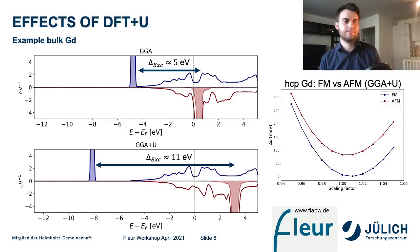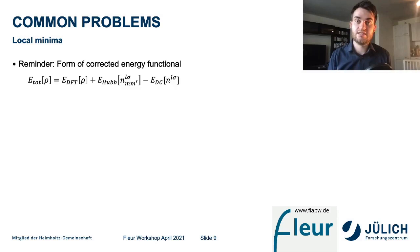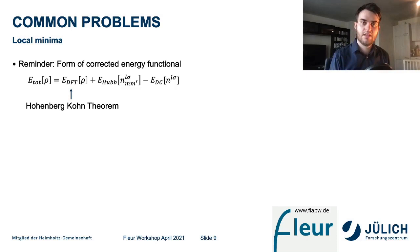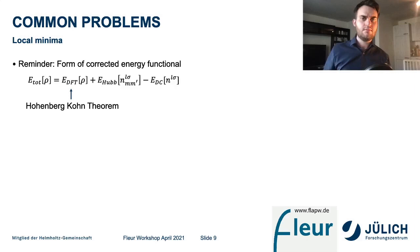Some common problems arise when using DFT plus U. Calculations are not guaranteed to end up in the global minimum. The Hubbard potential term is non-local and violates the Hohenberg-Kohn theorem, which previously guaranteed we reach the ground state energy corresponding to the ground state density. Without this guarantee, we can converge to local minima.